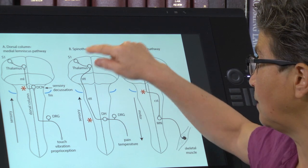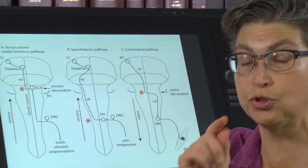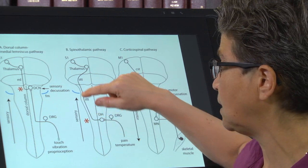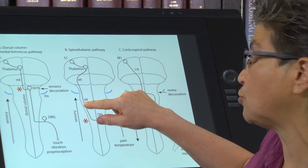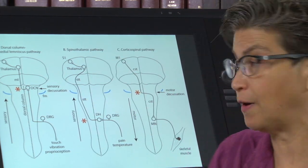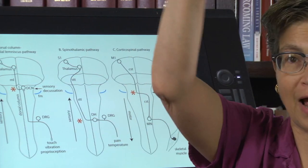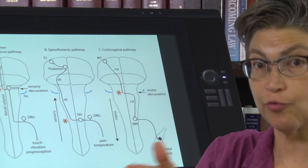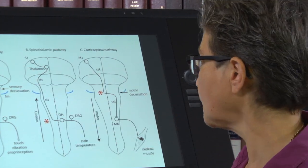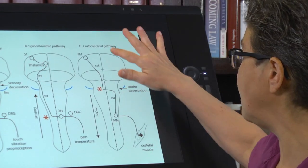When we talk about the spinothalamic pathway, there's not much interesting going on here. All we're going to do is see the information about pain and temperature already present in the spinothalamic tract — which in the spinal cord is in the ventrolateral quadrant — continue forward. We're just going to keep track of how it moves through the medulla, pons, and midbrain, and then hand it off to the somatosensory thalamus.